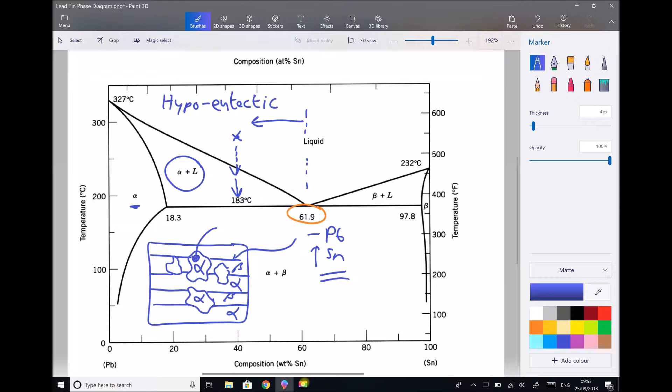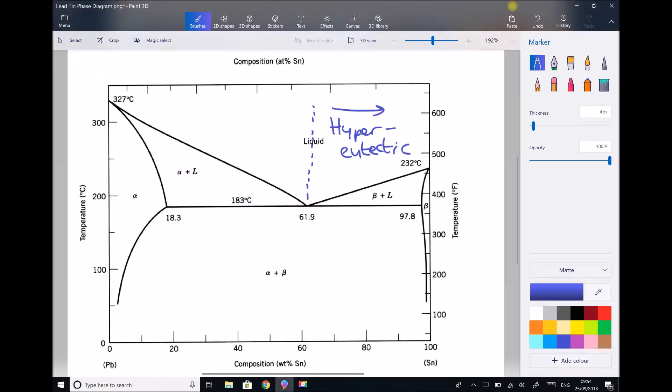Let's look at one more example, which will help to enhance your understanding of what we just spoke about there, and this time we're going to look at hyper eutectic compositions. Okay, so in a hyper eutectic composition, we must have more than 61.9% tin to begin with.